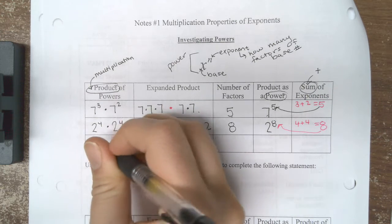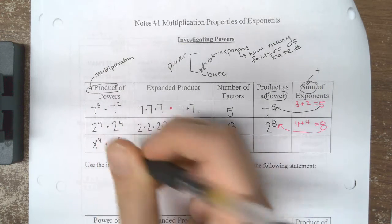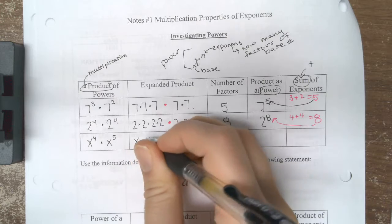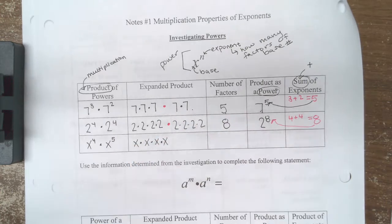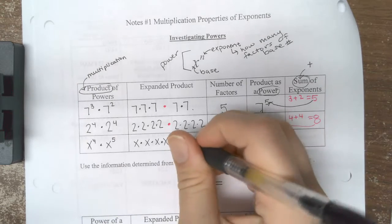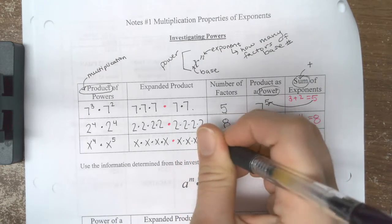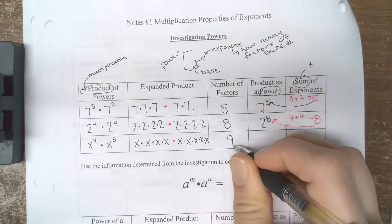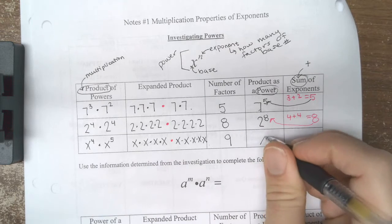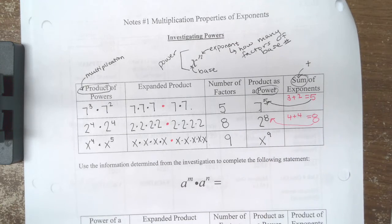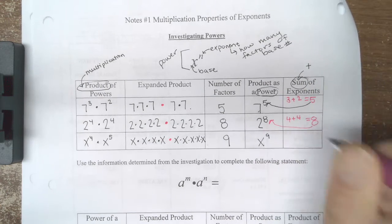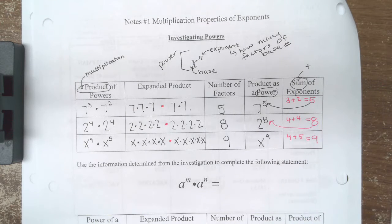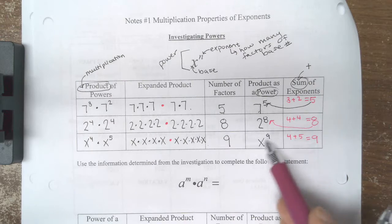If I had variables, X to the 4th times X to the 5th, so an unknown base, the first power would be 4 factors of X. The second, meaning I have 5 factors of X, and expanding that allows us to see that overall we have 9 factors of X, or that I could condense this to say X to the 9th. Again, if I look at the exponents I started with, the sum of those exponents add up to my condensed product here.